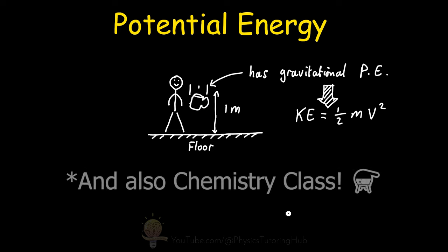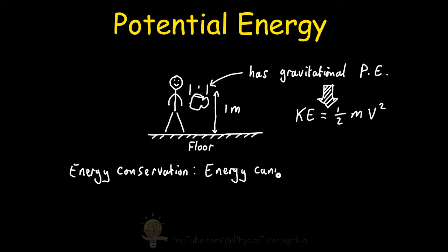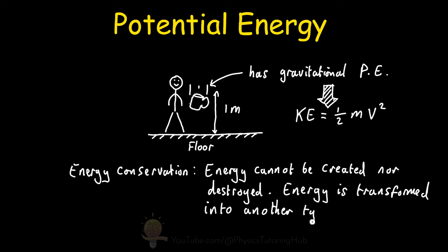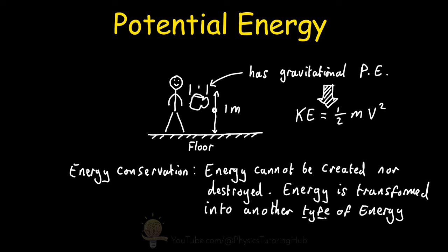One thing you'll hear in physics class is that energy can neither be created nor destroyed, and this is a fundamental principle of energy conservation. This means that when we drop our cup, all its gravitational potential energy is being converted into kinetic energy. This gravitational potential energy isn't disappearing — it's simply being transformed into kinetic energy. So as the cup is falling, its gravitational potential energy decreases, but at the same time its kinetic energy increases by the same amount.